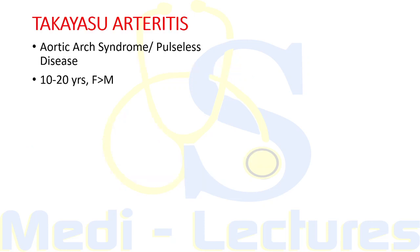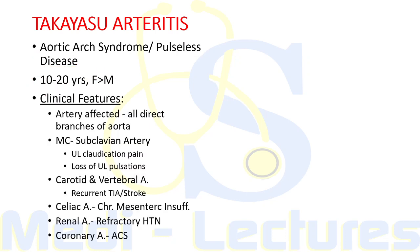Now for the second large vessel vasculitis: Takayasu Arteritis, also known as aortic arch syndrome as it can affect any direct branch of the aorta, and also called pulseless disease. It is commonly seen in the 10 to 20 years age group, more common in females. Clinical features depend on the artery affected.